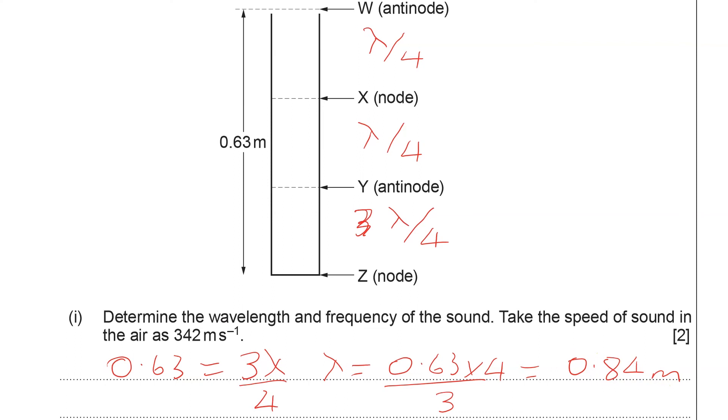We can then calculate the frequency using the speed of sound, where the frequency is the speed over the wavelength. 342 meters per second divided by 0.84 meters. Now this would be an example of a question where you should probably use a calculator because it's a little bit too difficult for most people to do in their heads. So if we type our numbers into the calculator, we find we get a frequency of 407 Hz.